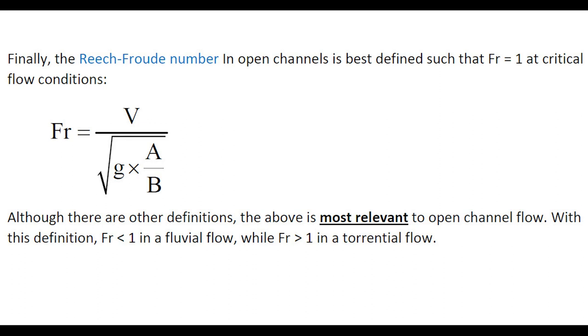Finally, the Froude number in open channels is best defined in such a manner that it equals unity at critical flow condition, using the definition Fr equals the ratio of V to square root of G times A over B. And although there are other definitions, the above is most relevant in open channel flow.